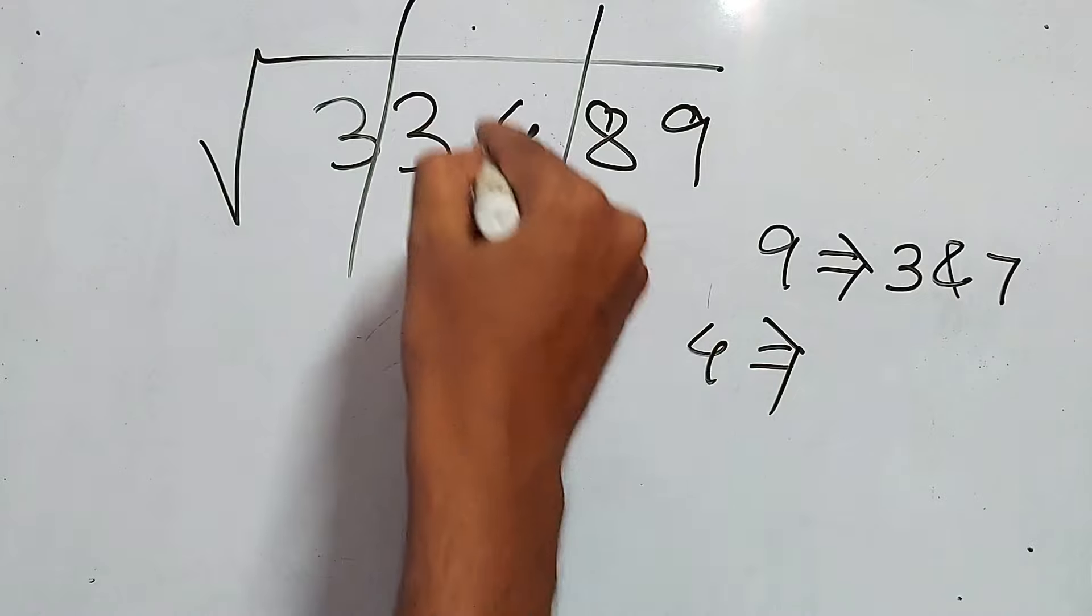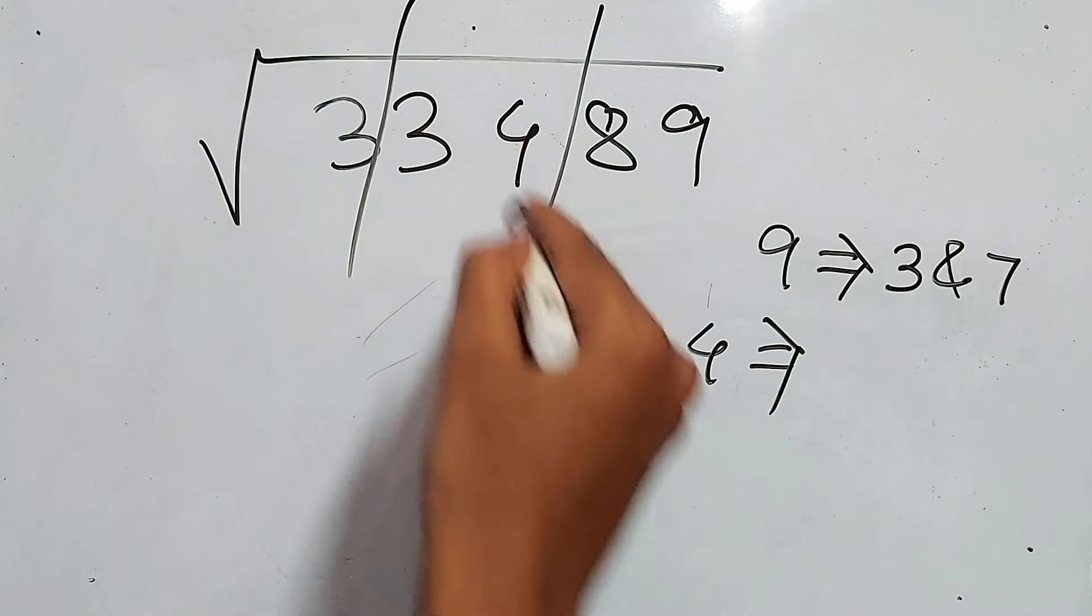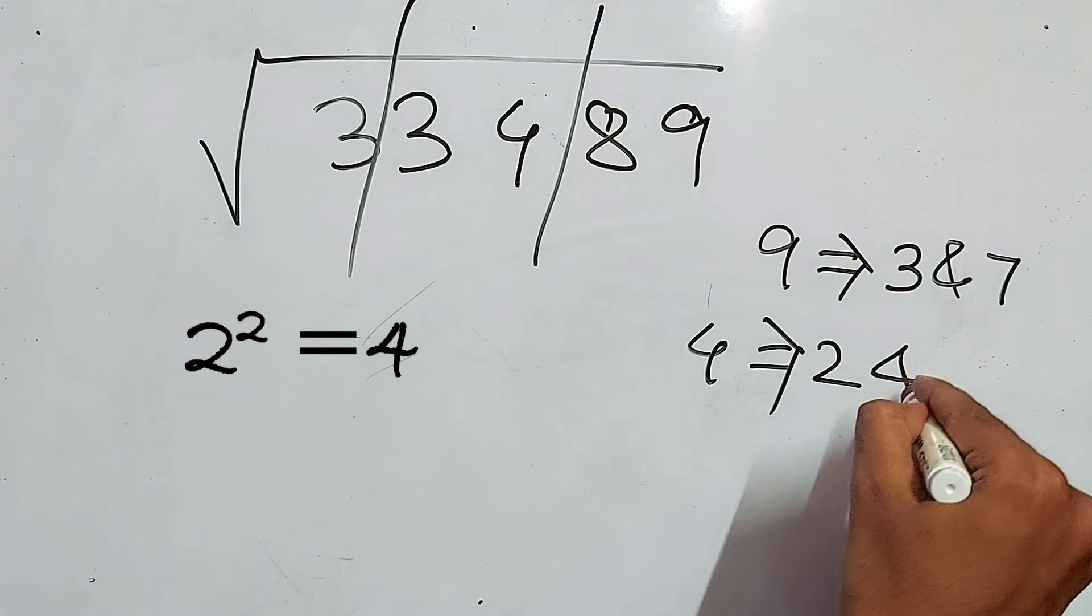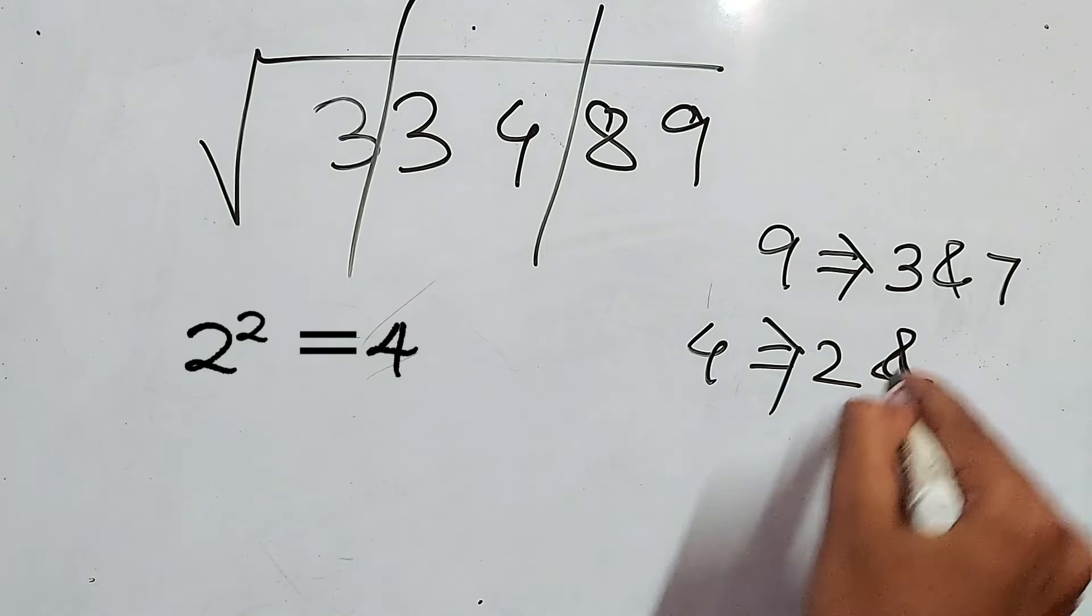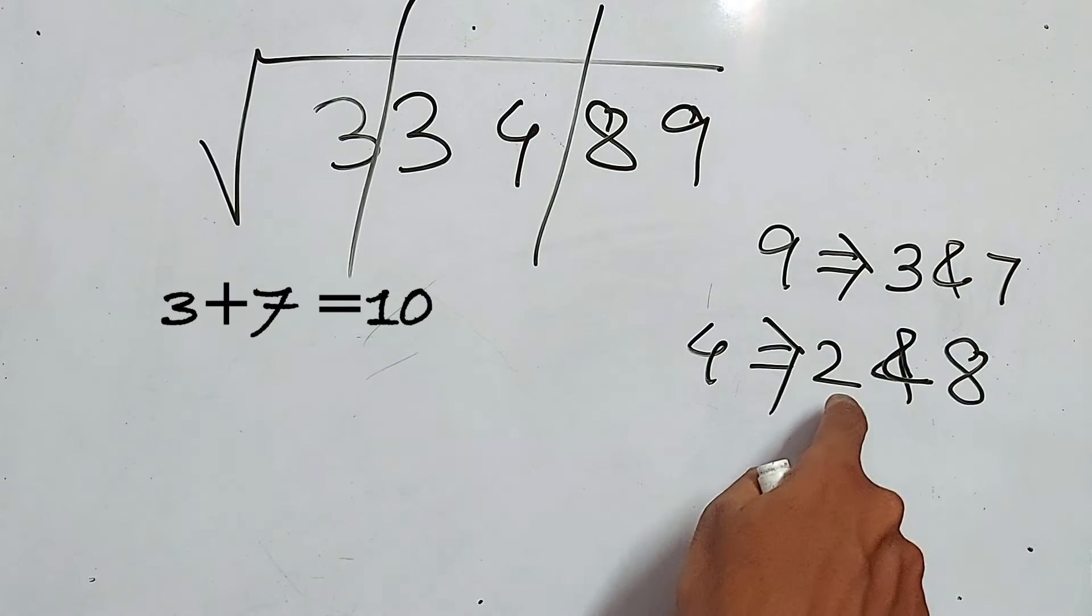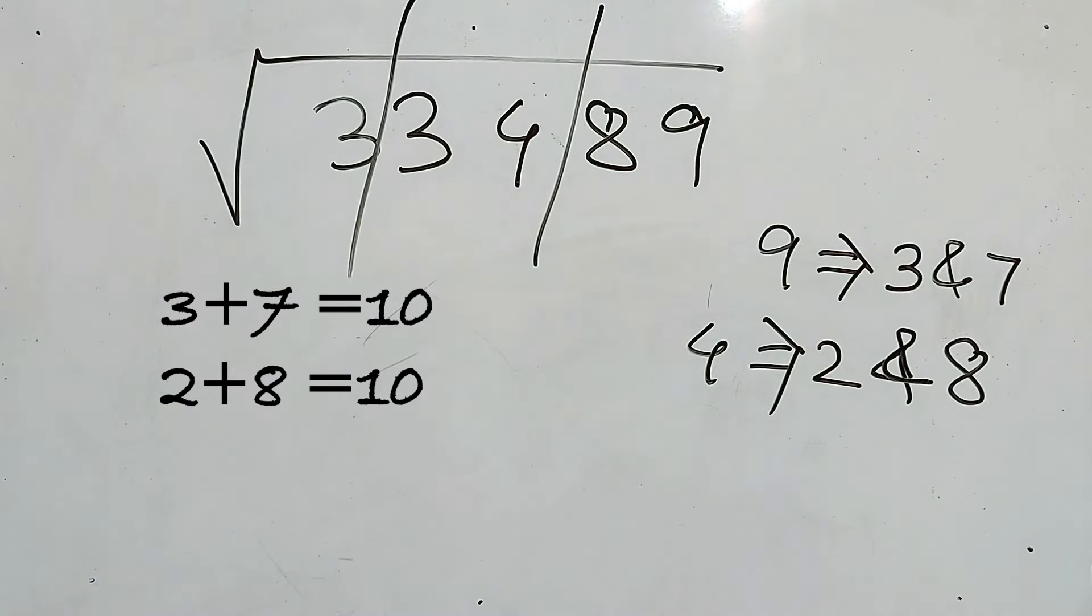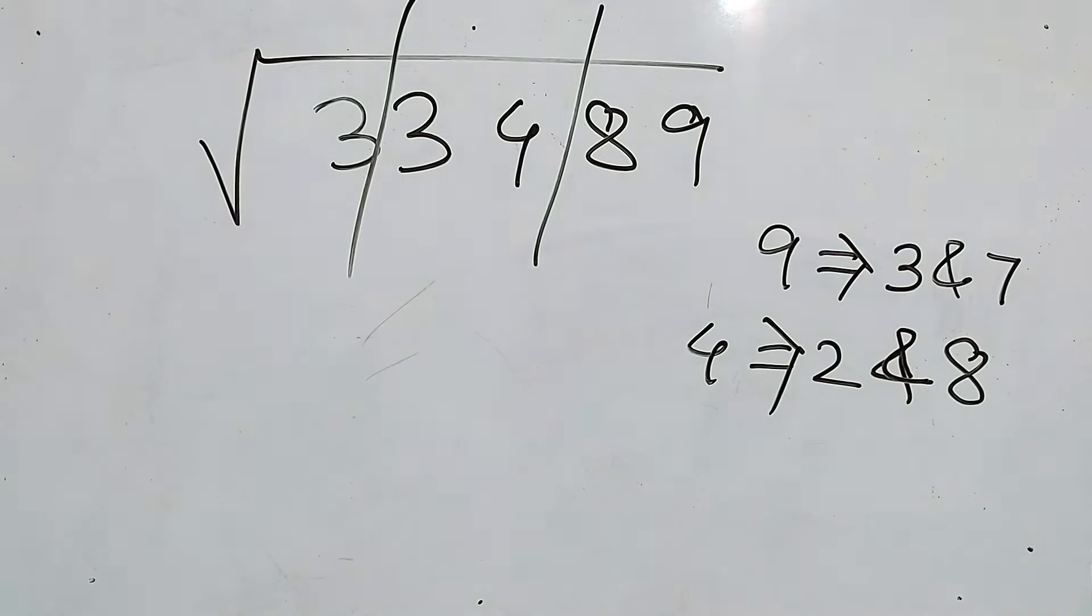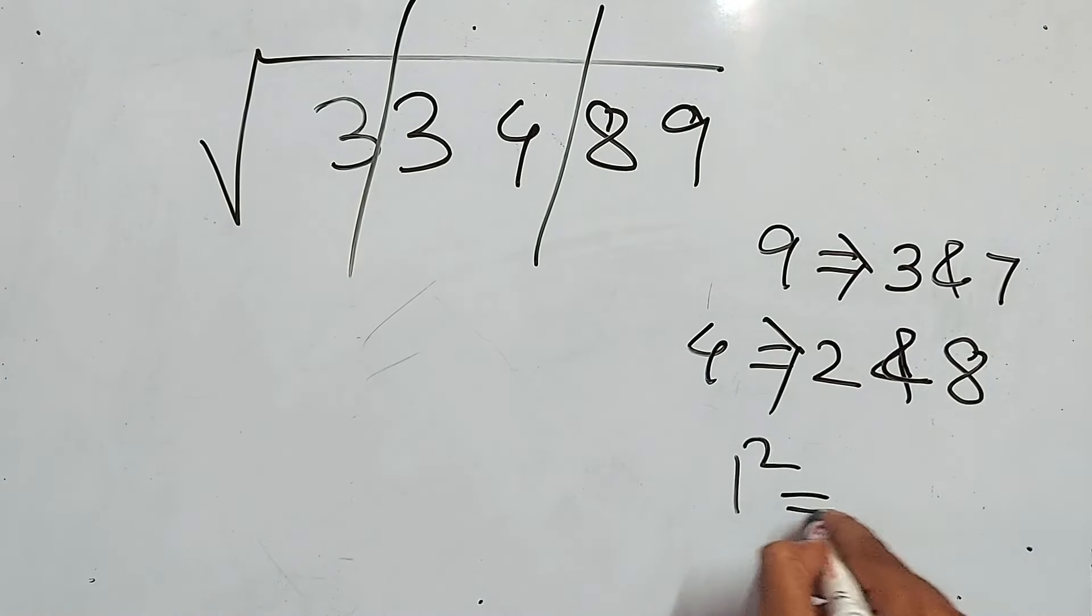And one more number. What is that? 8. I must give you a simple trick. Total of these numbers has to be 10. 3 + 7 is 10. 2 + 8 will be 10. So whenever you get one number, next number will be easier for you to find it. So 2 and 8 for 4. And let's work for this 3. 1² is 1 and 2² is 4.